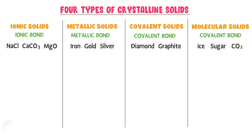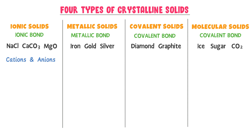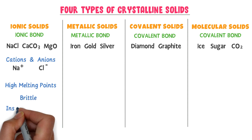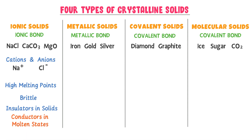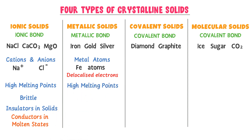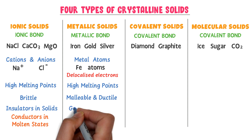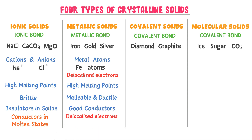Ionic solids like sodium chloride are made up of cations and anions — metals and non-metals. They have high melting points, are brittle in nature, and are insulators in the solid state. But in molten or aqueous solution, they conduct electricity. Metallic solids like iron are made up of metal atoms with a sea of delocalized electrons. They have high melting points, are malleable and ductile, and are good conductors of electricity.